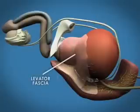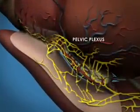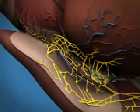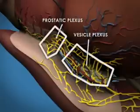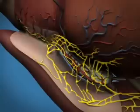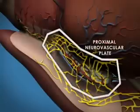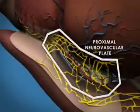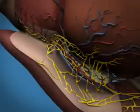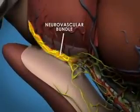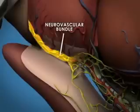In this view, we also see the levator fascia, which covers the prostate. The pelvic plexus is found on the anterolateral aspect of the rectum. The important erectile components of this plexus include the vesicle plexus and the prostatic plexus, and interconnecting nerve fibers. These ganglions and neuronal connections form a proximal neurovascular plate, which can be injured during dissection of the seminal vesicles. The neurovascular plate coalesces to form the neurovascular bundle.